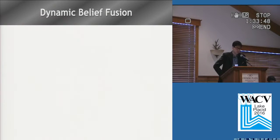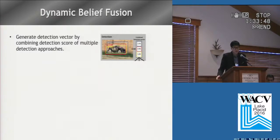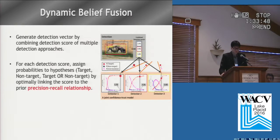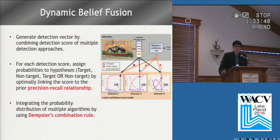Here, let me describe our proposed dynamic belief fusion. Given an image, a detection vector is generated by combining detection scores from multiple detectors. For each detector, we assign probabilities to three hypotheses as described in the previous slide. Fusion probability can be calculated by integrating the probability distribution of multiple algorithms. We use Dempster's combination rule for this integration.